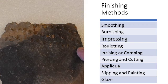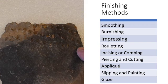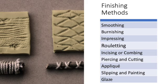Impressing the surface with a stick or tool or fingernail while the surface is still plastic leaves really obvious traces. While rolling a cord-wrapped stick or other roulette across the surface leaves a repeating pattern.